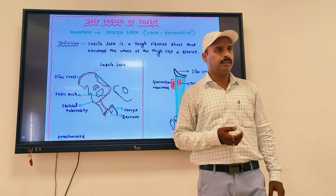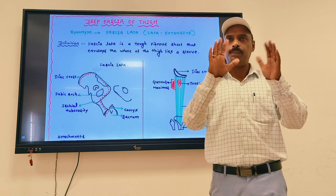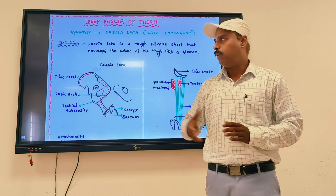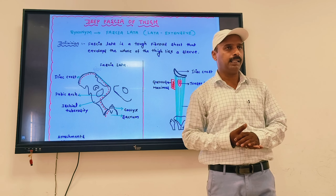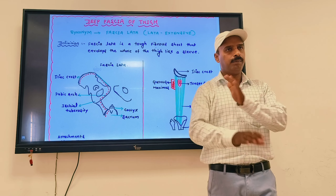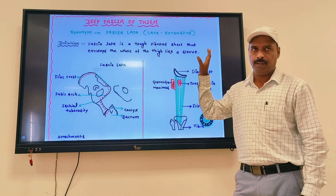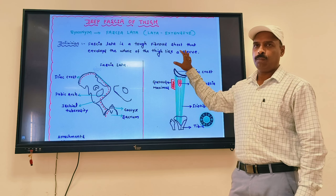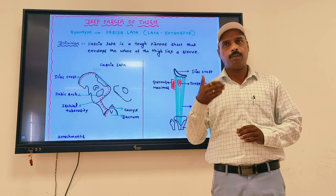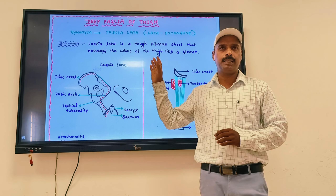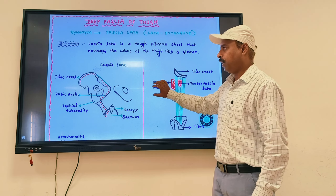Fascia lata is defined as the tough fibrous sheet which envelops the whole thigh like a sleeve. This sleeve-like covering is what we call the deep fascia of the thigh. You must remember: the deep fascia of the thigh is called fascia lata, and its definition is that it is the tough fibrous sheet which envelops the whole thigh like a sleeve.